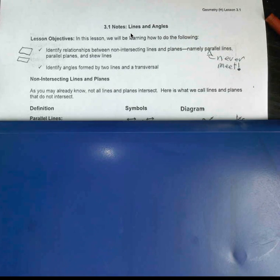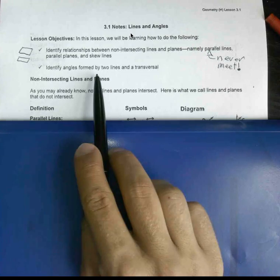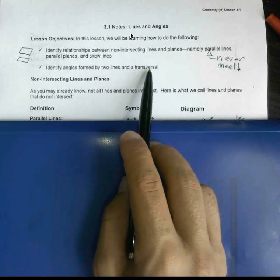Skew lines don't really meet or intersect and they're on different planes. In the next video you'll see the types of angles that are formed by two lines and a transversal. That one's pretty cool.